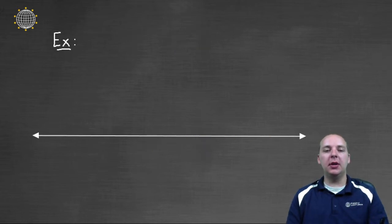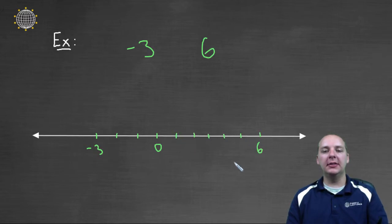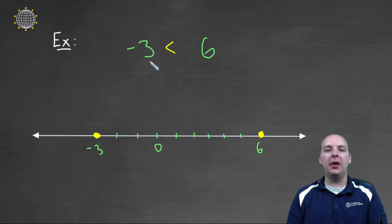Let's make the next few a little more challenging. How about negative three blank six? On the number line we have zero, then negative one, two, negative three on the left, and one, two, three, four, five, six on the right. Six is to the right of negative three on a number line, so negative three is less than six — or you can say six is greater than negative three. The inequality would face this way.